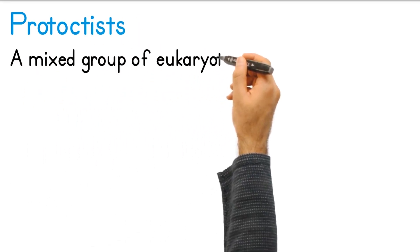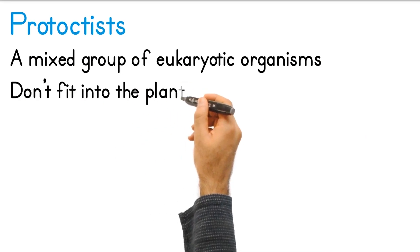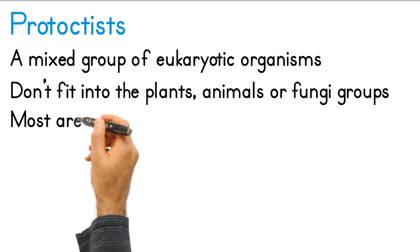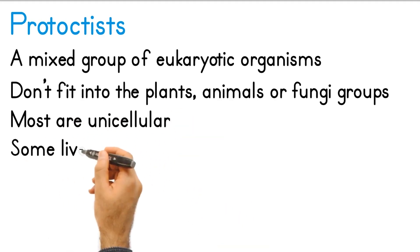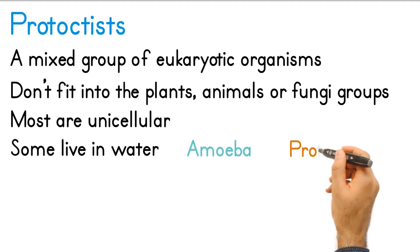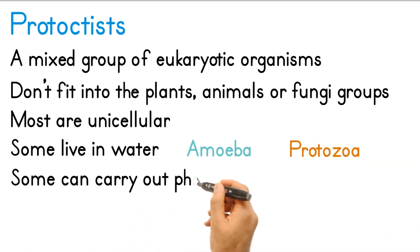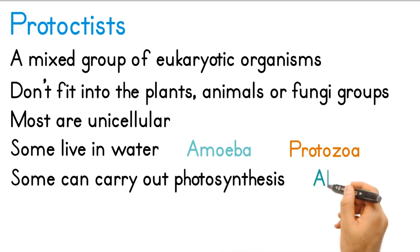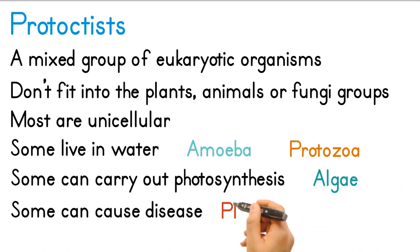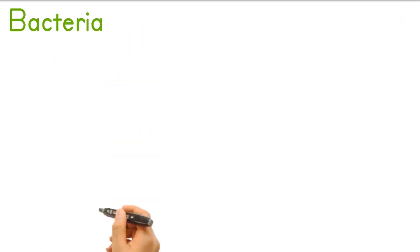Protoctists are a mixed group of eukaryotic organisms, many of which don't fit into the plants, animals, or fungi groups. Most are unicellular. Some live in water, like the amoeba — these are called protozoa. Some can carry out photosynthesis like plants — these are called algae. Some organisms can cause disease, like plasmodium, which causes malaria.